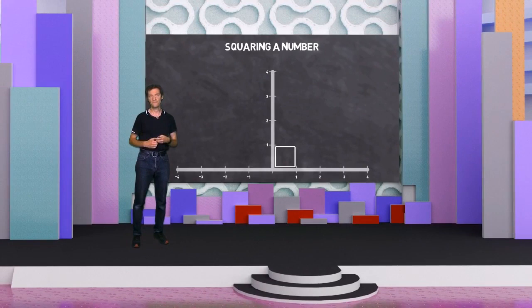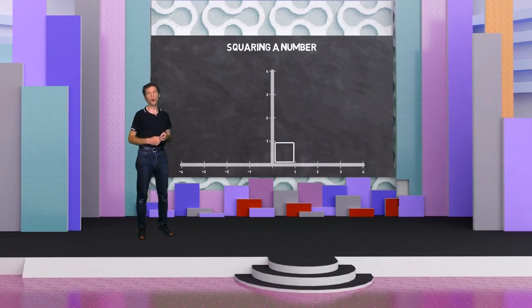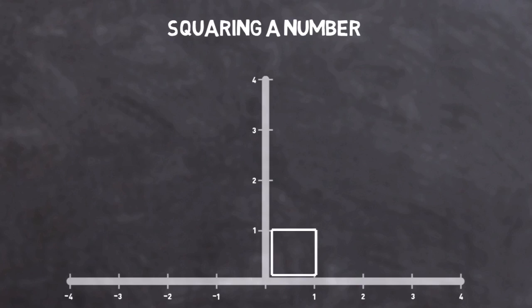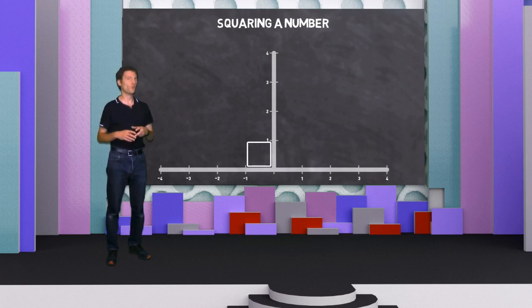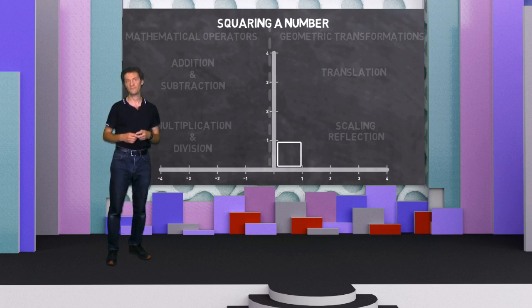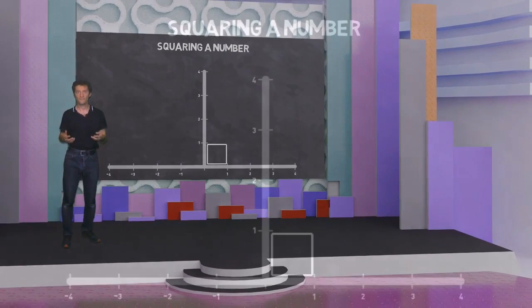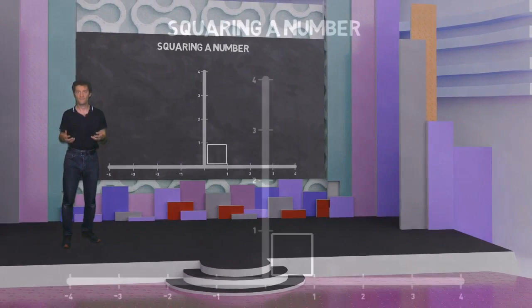If this is true, how can anything squared ever equal minus 1? In other words, if we ask the same question in a geometric way, what transformation can we perform twice to get from here to here, using multiplication? Scaling doesn't help us, and neither does reflection, as the squaring operation always ends up reflecting the object back into the domain of positive numbers. Translation can only be done with addition or subtraction, so what's left? What transformation, when performed twice, can get me from here to here?